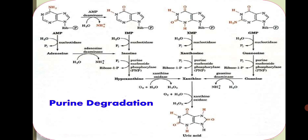Purine nucleotide monophosphates — AMP, IMP, or GMP — are converted to their respective nucleoside forms, that is adenosine, inosine, and guanosine, by the action of the nucleotidase enzyme. The amino group from AMP or adenosine can be removed to produce IMP or inosine. Then inosine and guanosine are converted to hypoxanthine and guanine — the purine bases — by the enzyme purine nucleoside phosphorylase.